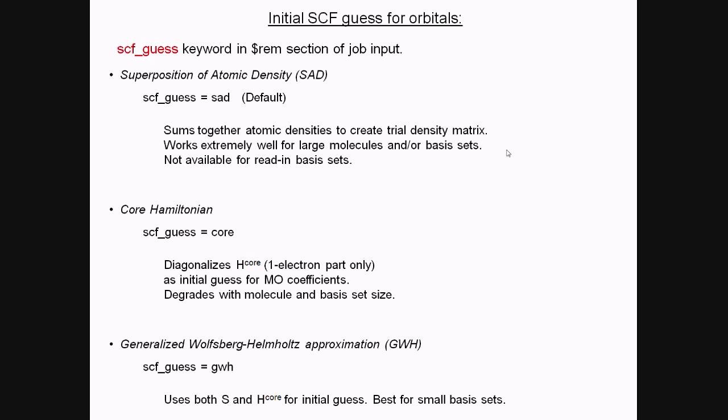Two other options are the core Hamiltonian, which just diagonalizes the one electron part, and the GWH guess, which uses atomic overlap and the core part. These, however, work mostly for small molecules, and you can try them out if, for instance, SAD doesn't get you anywhere.